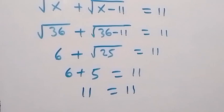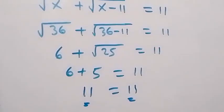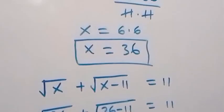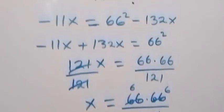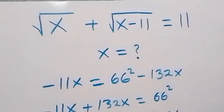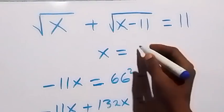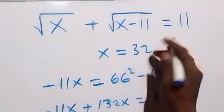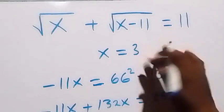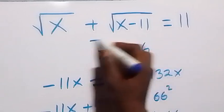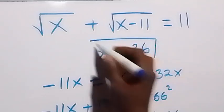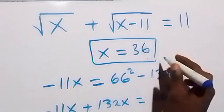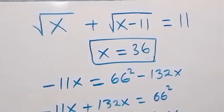6 plus 5 is 11, which equals 11, so the left-hand side equals the right-hand side. We can conclude that x equals 36 satisfies this given problem. Thank you for watching, don't forget to subscribe to my channel and turn on the notification bell. The answer is 36. See you next class, bye for now.